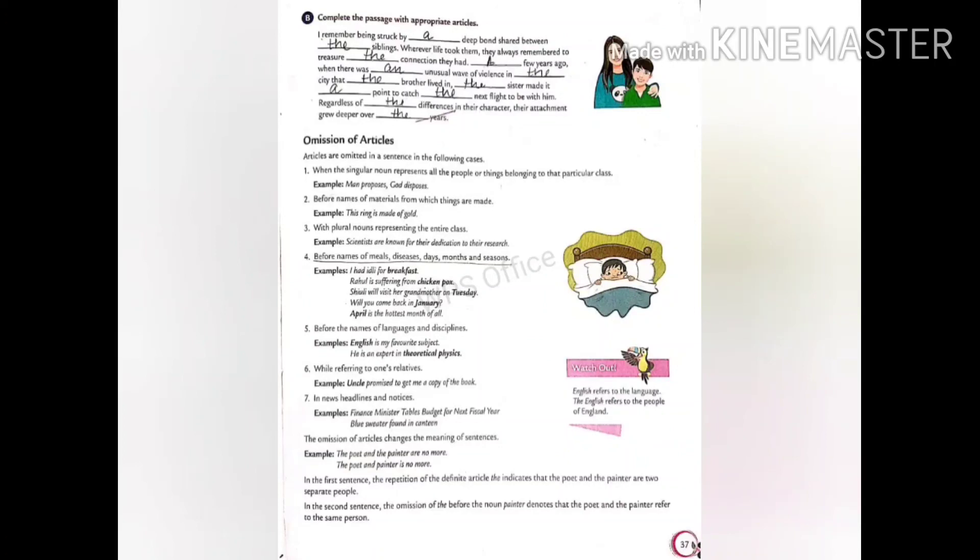In the first sentence, the repetition of the definite article the indicates that the poet and the painter are two separate people. In the second sentence, the omission of the before the noun painter denotes that the poet and the painter refer to the same person.